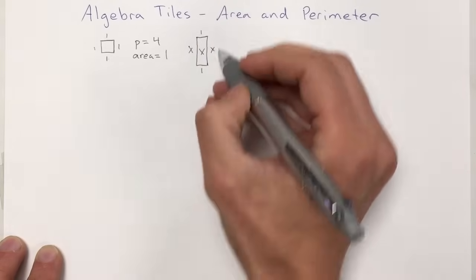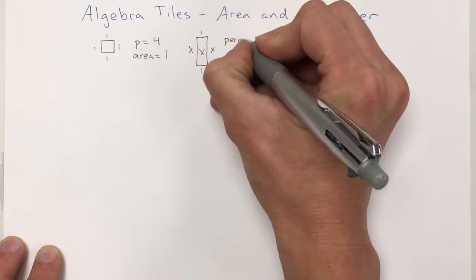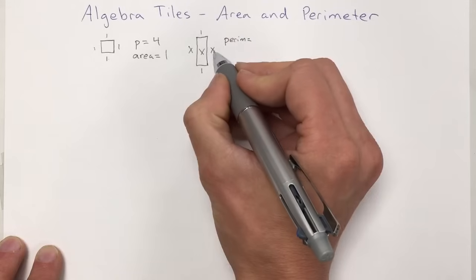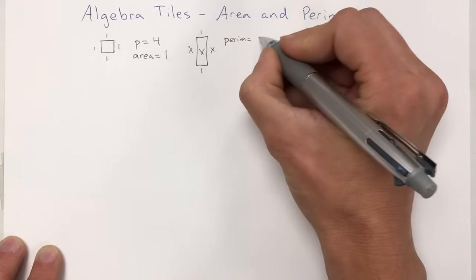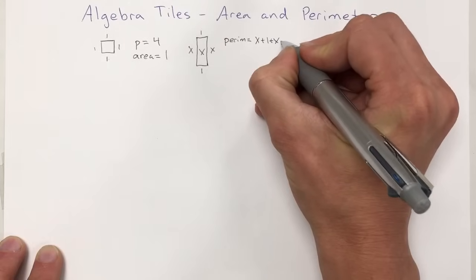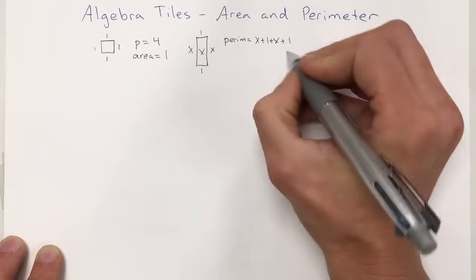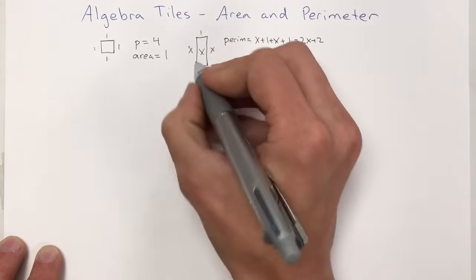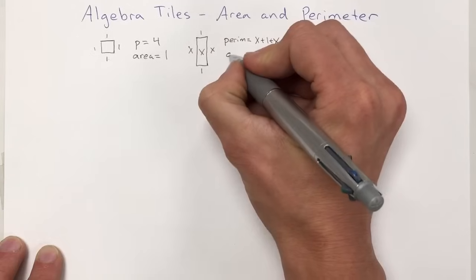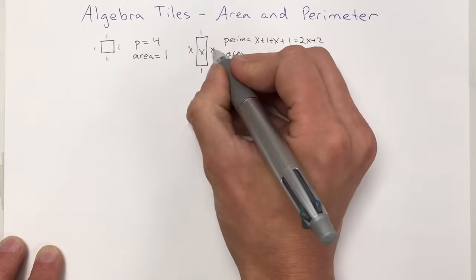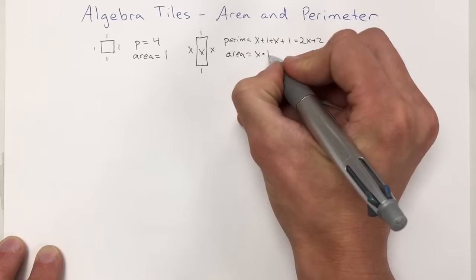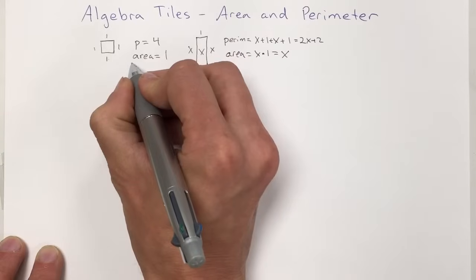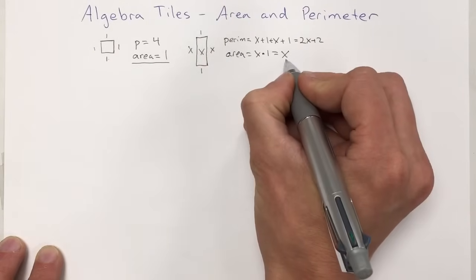So we've got a width value of one. If we think about the perimeter, going around the sides we add x plus one plus x plus one, which equals 2x plus two. Our area of this one is x times one, and since any number times one is itself, the area is x.